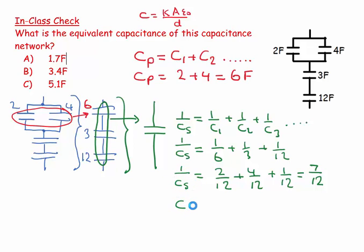flip. Cs is equal to 12 over 7, which equals 1.7 times—49, 50—1.7 farads.